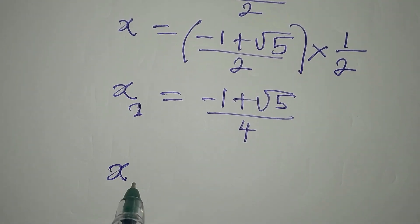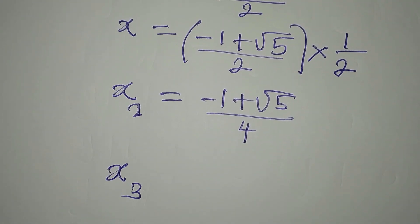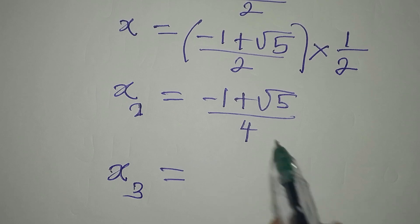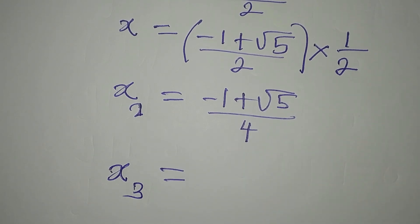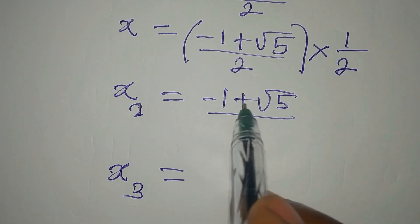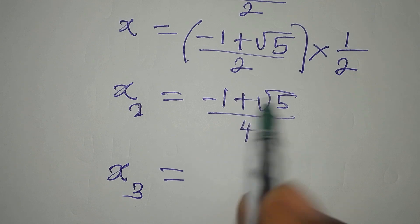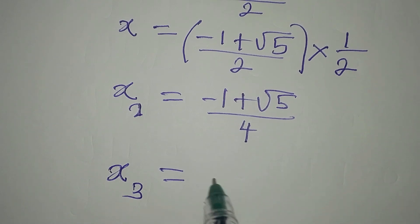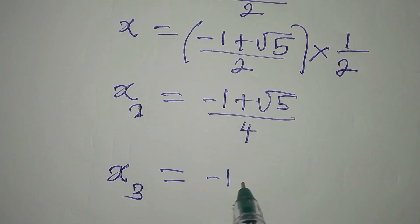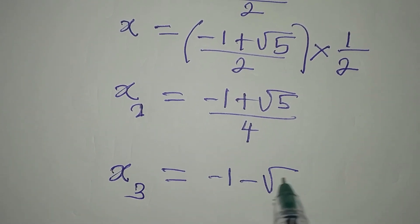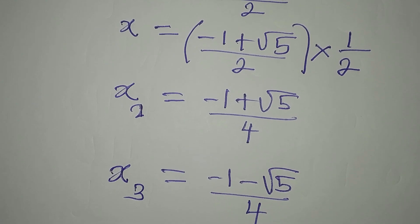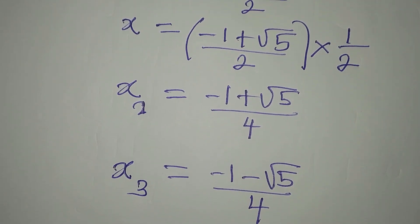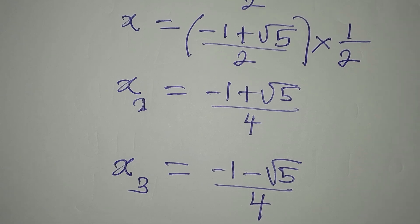There will be a third value of x, where the sign will be negative, giving minus 1 minus square root of 5 over 4. So we have solved the problem completely.